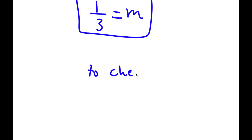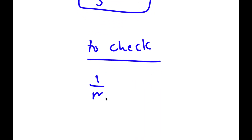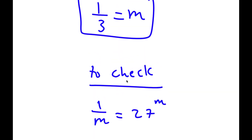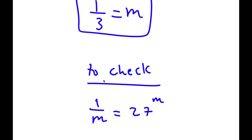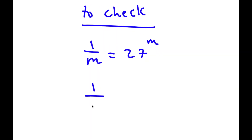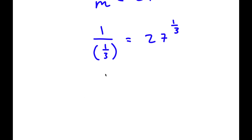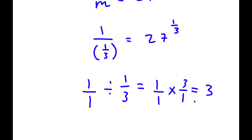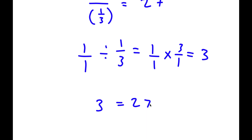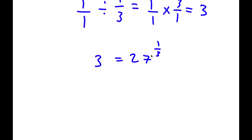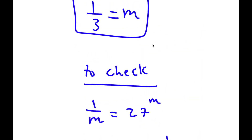To check, starting with 1 over m equals 27 to the power of m, and we know m is 1 over 3. So I have 1 over 1 over 3 is equal to 27 to the power of 1 over 3. Now 1 divided by 1 over 3 equals 1 times 3 over 1, which is 3. And 27 to the power of 1 over 3 is the cube root of 27, which is 3. So I have 3 equals 3, and my solution is correct.